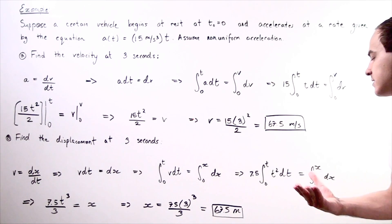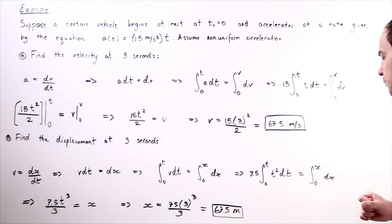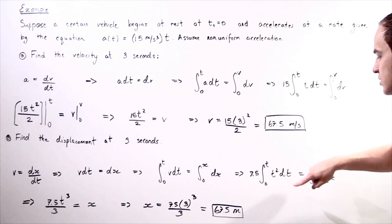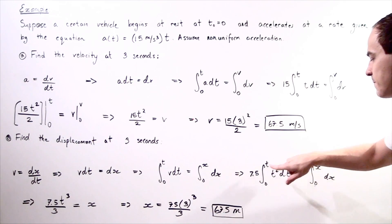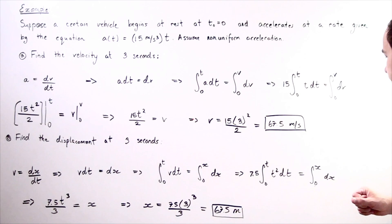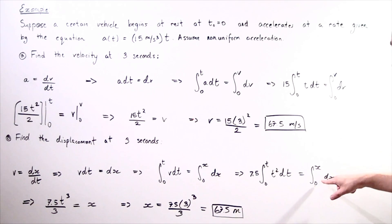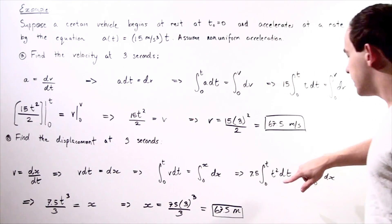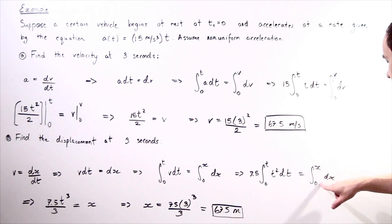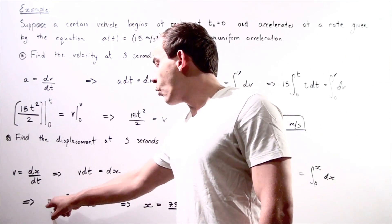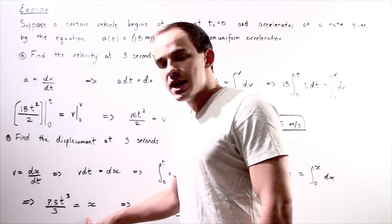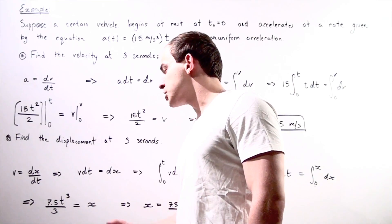Because 7.5 is a constant, we take it out of the integral. Taking the definite integral, the t squared term becomes t cubed divided by 3, multiplied by 7.5, and the right side simply becomes x. Evaluating from zero to t, the zero terms cancel on both sides, and we're left with 7.5t cubed divided by 3 equals x. This is our displacement or position function with respect to time.